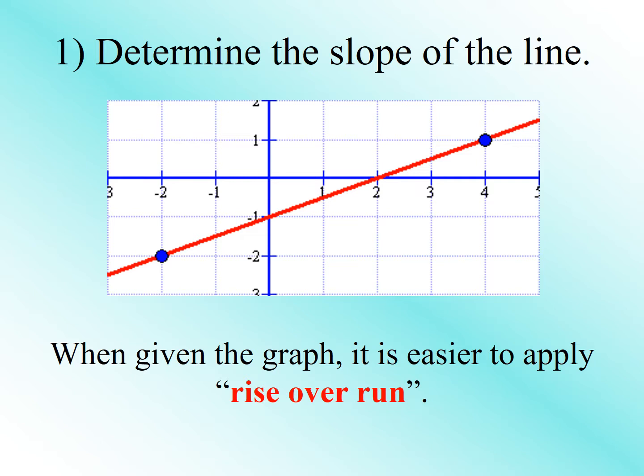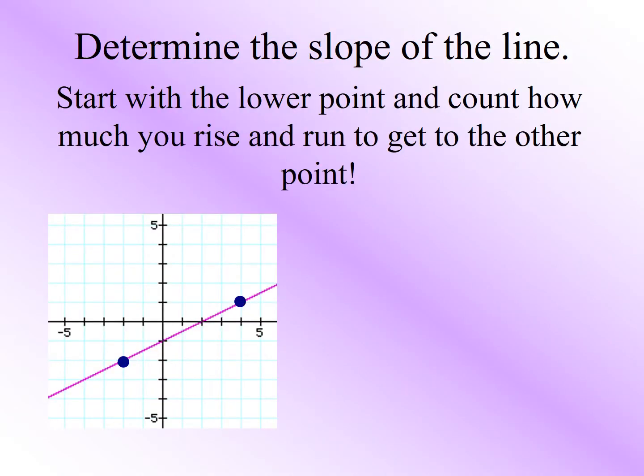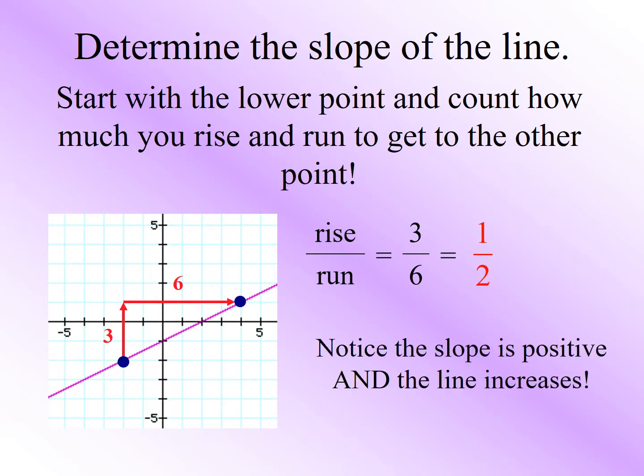Alright so let's determine the slope of this line. You could do it a couple ways. You could see how many units it's rising up and how many it's running over. The rise would be 3 and the run would be 6, so you can reduce that fraction to one-half. The slope is positive and the line increases.